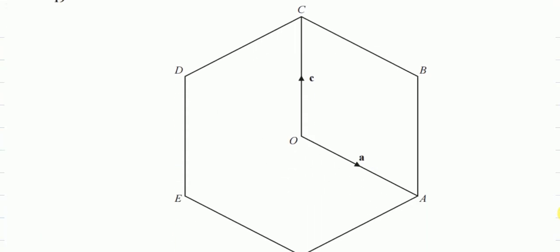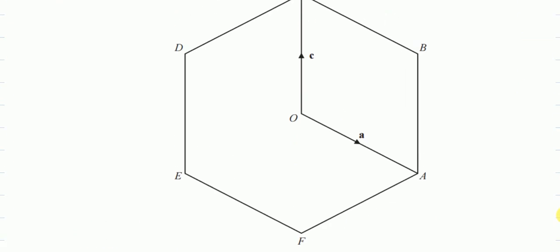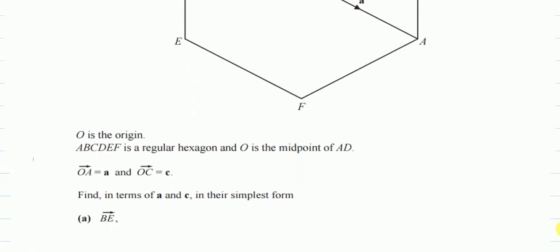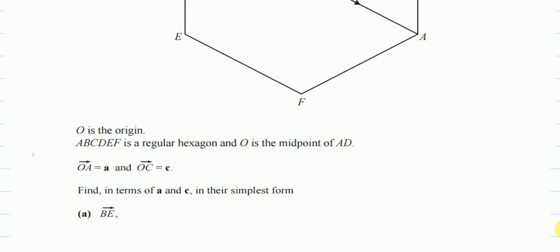Finally, I have question number 19, which is a vector. So remember, the routes are, in this vector, it's given a, n, c. So we cannot use any other route. That's very important. O is the origin. And a, b, c, d, e, f is a regular hexagon.